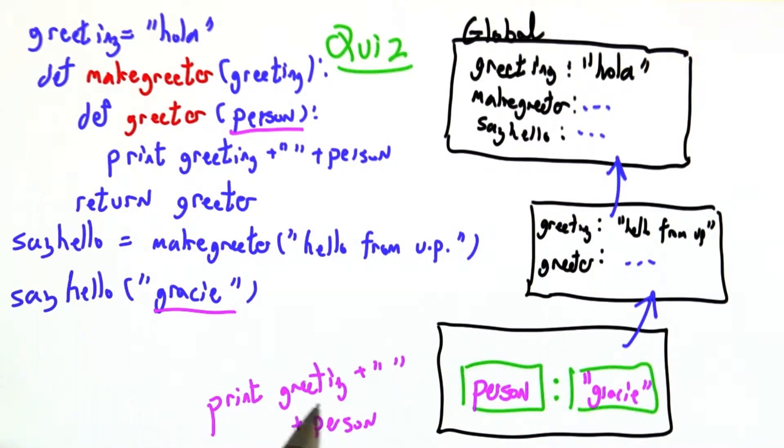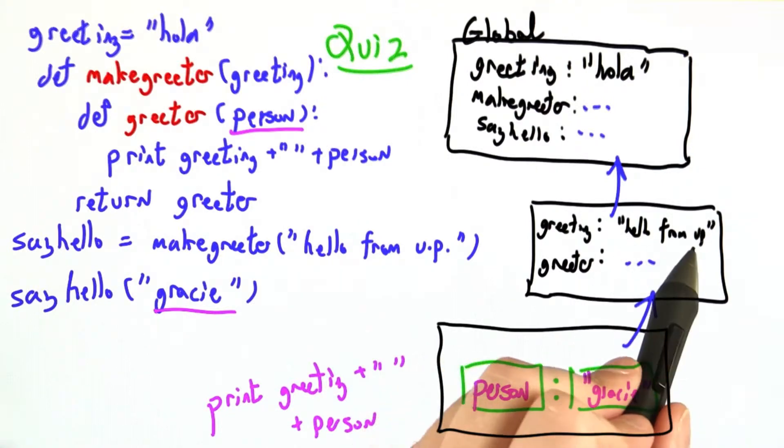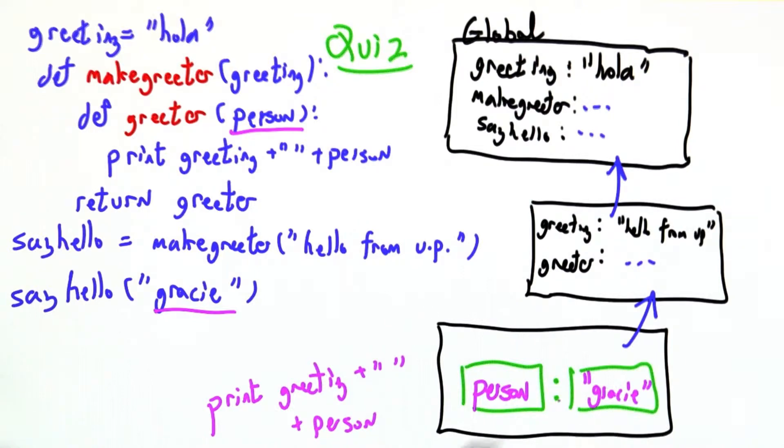So now when we go to evaluate greeting, we don't see it here but we'll go one up and get hello from up and we'll try to find person. We see it right here, we get Gracie. We'll compose them together and print out exactly the same behavior we saw in the interpreter.